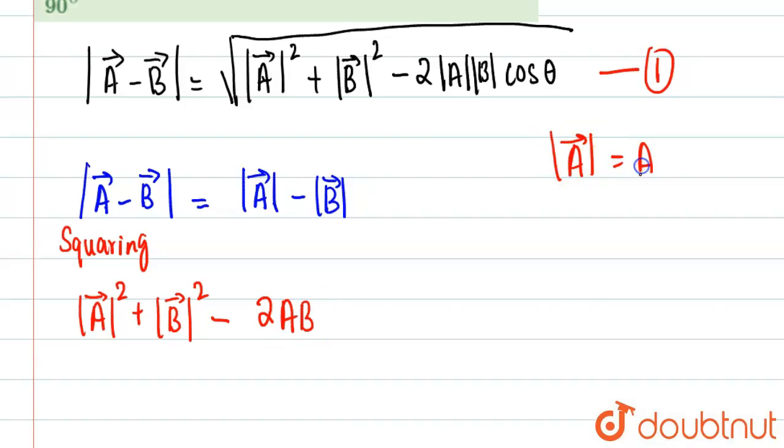So A² + B² - 2AB cos θ will be equal to A² + B² - 2AB. Got it? Basically it will be minus 2AB.